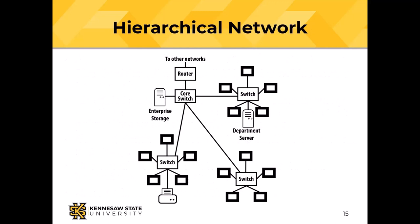In the hierarchical network diagram: a department server with a switch and stations, another department with its own switch and nodes, another department with a switch, nodes, and a printer. A core switch moves traffic between local networks. Enterprise storage and the router to the internet connect to that core switch.